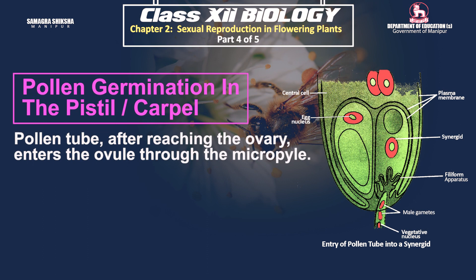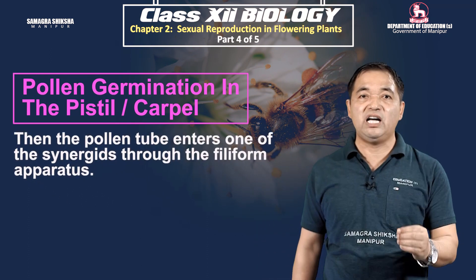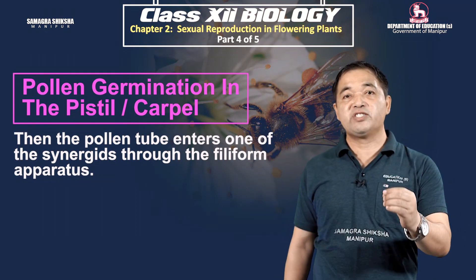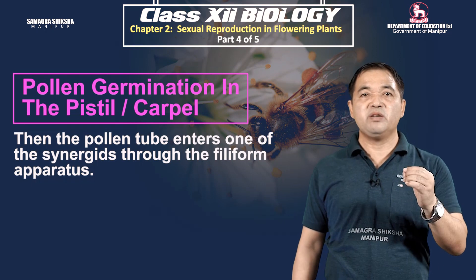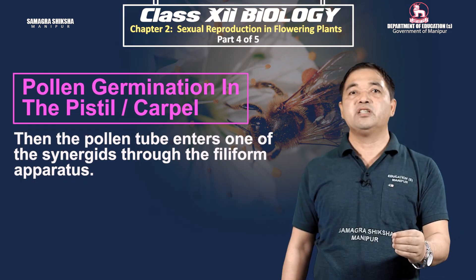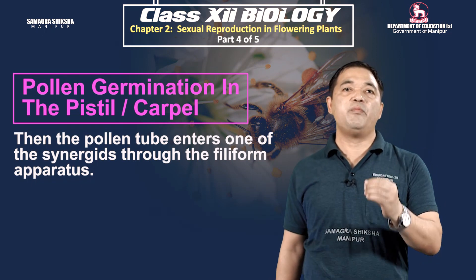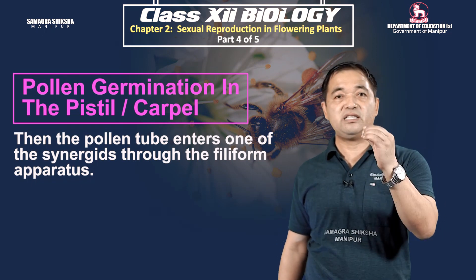The generative cell divides to form two male gametes. Two male gametes are thus formed and carried within the pollen tube. The pollen tube then reaches the ovule, which contains the embryo-sac. The pollen tube enters the embryo-sac.